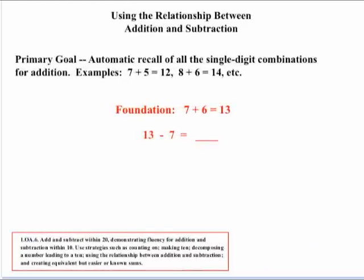For an example of the relationship between addition and subtraction: if kids have 7 plus 6 equals 13 as their foundation and have automatic recall, then when they see 13 minus 7, they'll know right away — 6 plus 7 is 13, so the solution has to be 6.